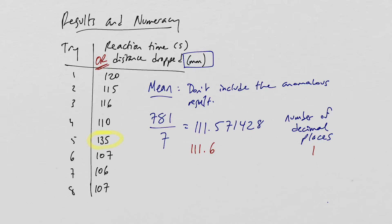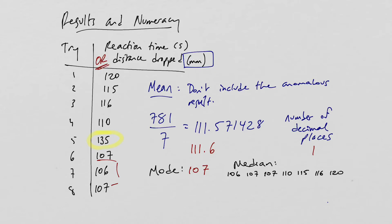They can also ask for the mode — the value that repeats itself most often. In this case 107 appears twice, so the mode is 107. For the median, put all values in order: 106, 107, 107, 110, 115, 116, 120. The median is the middle value, which is 110. Make sure you're comfortable with mean, mode, and median, and look out for it specifying a number of decimal places for the mean.